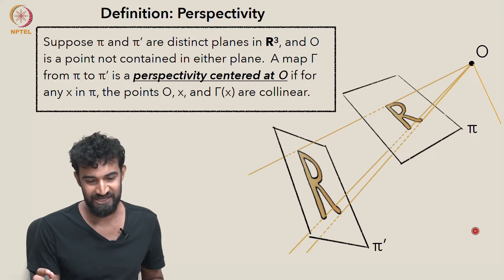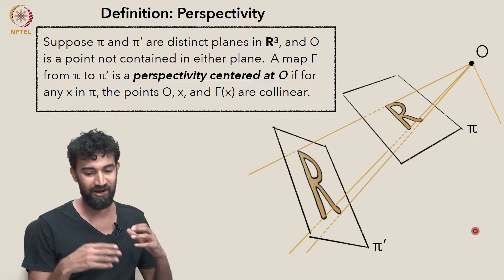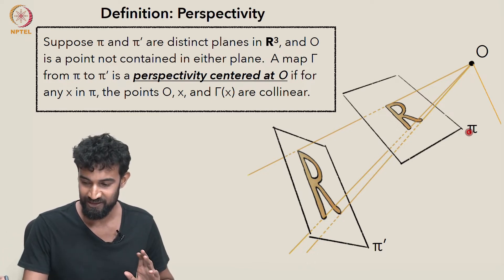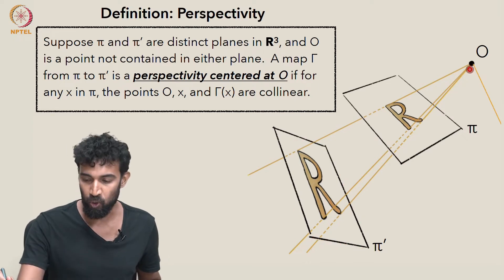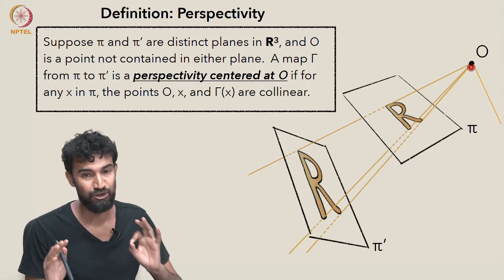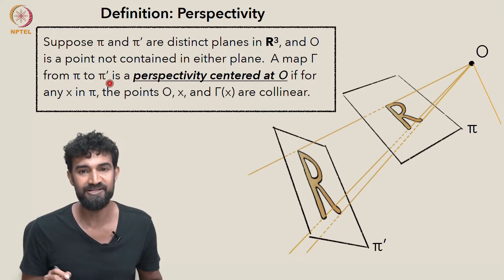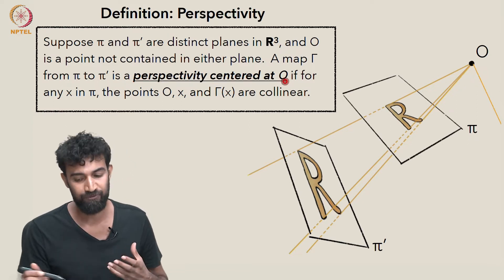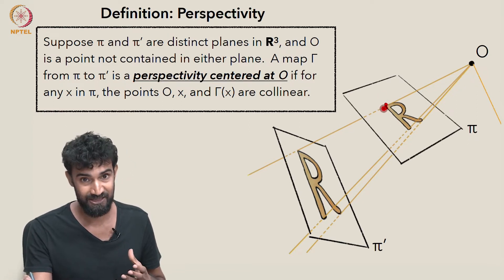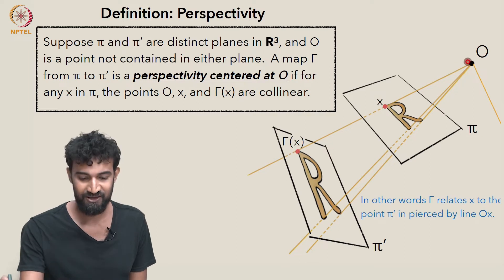The definition is the following. Let's suppose that π and π' are distinct planes in R3. Here's π, and here's π'. And O is a point that's not contained in either plane. A map γ from π to π' is a perspectivity centered at O if for any x in π, the points O, x, and γ(x) are collinear.